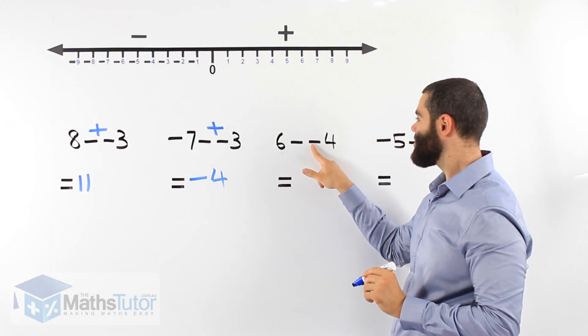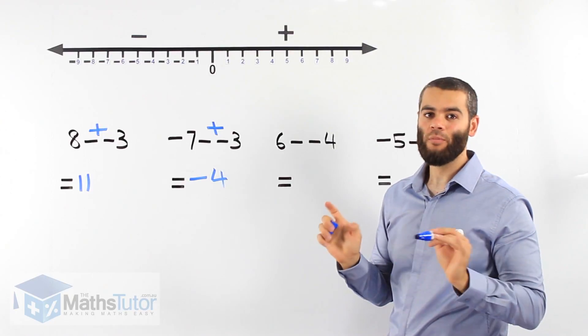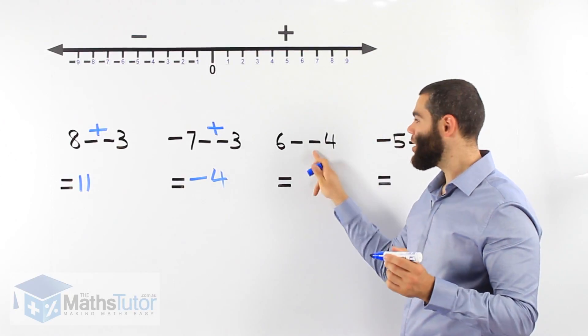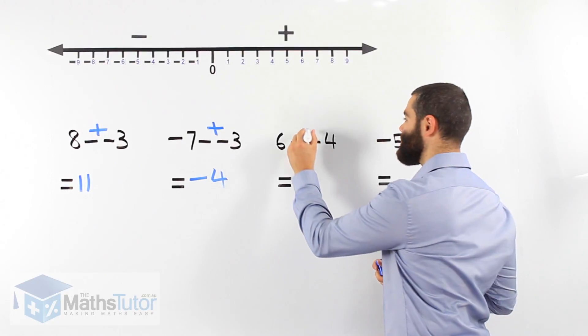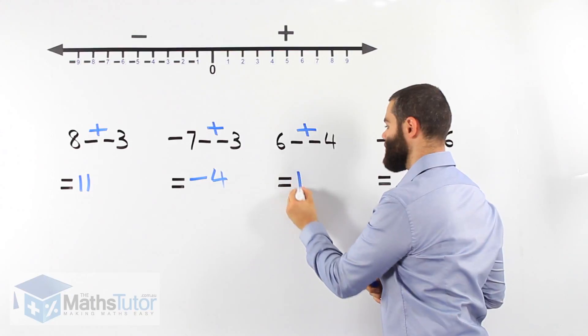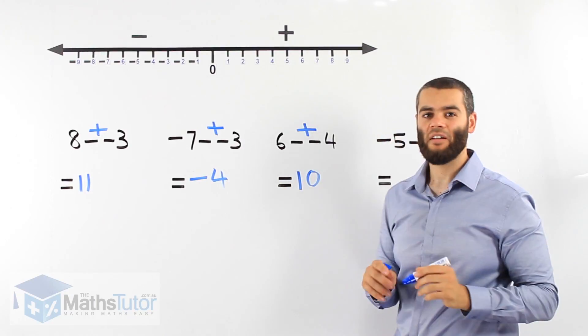6 minus negative 4. Come on, you can do this one. What do we do? Two negatives side by side. What do they become? A plus. 6 plus 4. Our answer is 10.